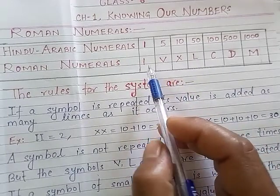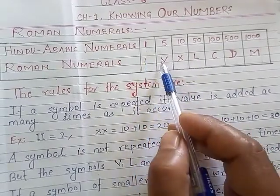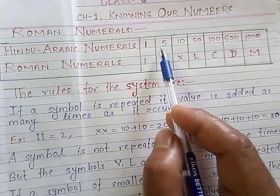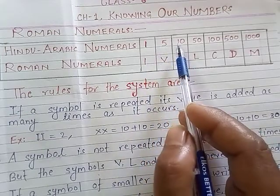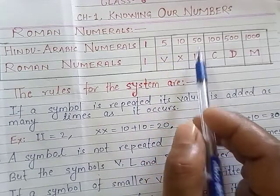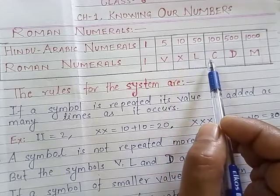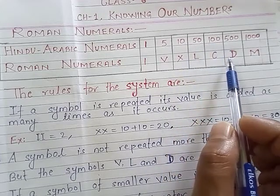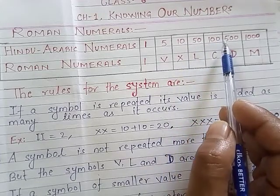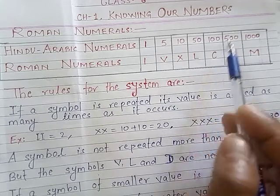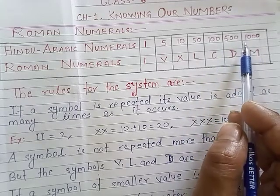For example, capital I is used for 1, V is used for 5, X is used for 10, L is used for 50, C is used for 100, D is used for 500, and M is used for 1000.